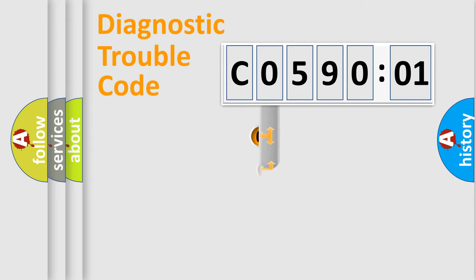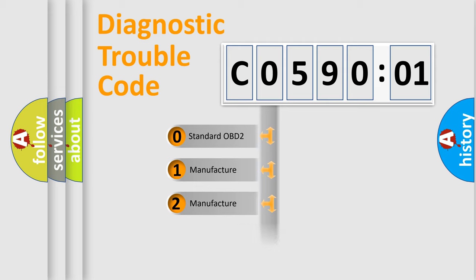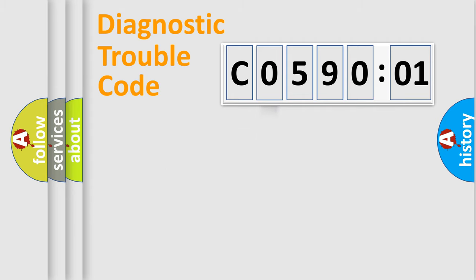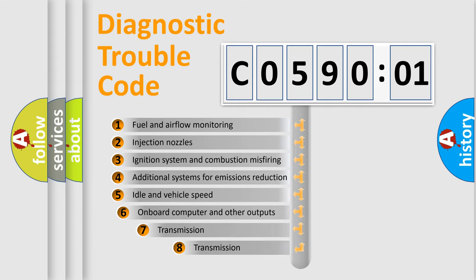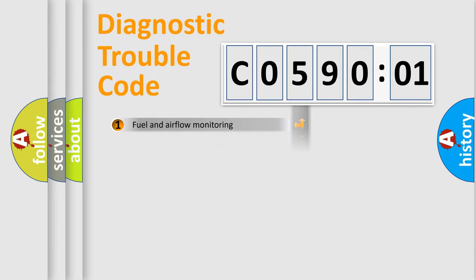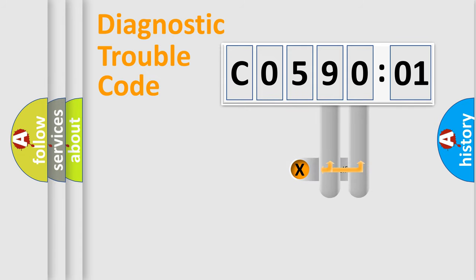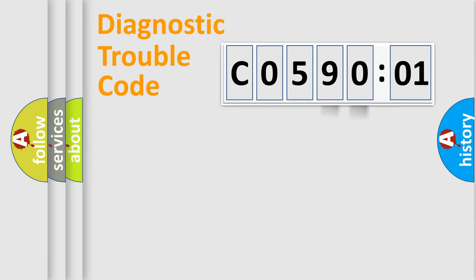This distribution is defined in the first character of the code. If the second character is expressed as zero, it is a standardized error. In the case of numbers 1, 2, or 3, it is a more manufacturer-specific expression of a car-specific error. The third character specifies a subset of errors. The distribution shown is valid only for the standardized DTC code. Only the last two characters define the specific fault of the group.